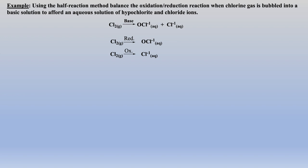Chlorine, which is reduced, needs to be balanced. Then we balance the oxygen atoms by adding the same number of water molecules to the reactants side. Now we add the same number of protons to the product side so that the hydrogens are equated. Finally, we add 2 electrons to the product side to balance the charges.